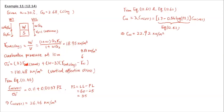Once you get the undrained shear strength, the unconfined compression strength q sub u is 2 times Cu, which gives 45.84 kilonewtons per meter squared. That's the unconfined compression strength. That's example 11 — using empirical relationships to estimate the shear strength parameters of clays.